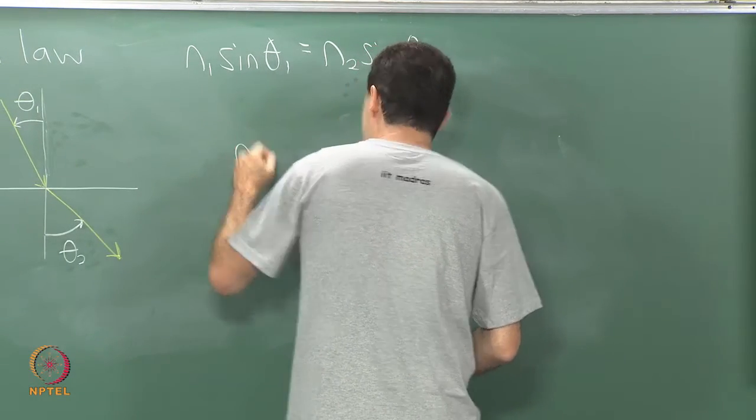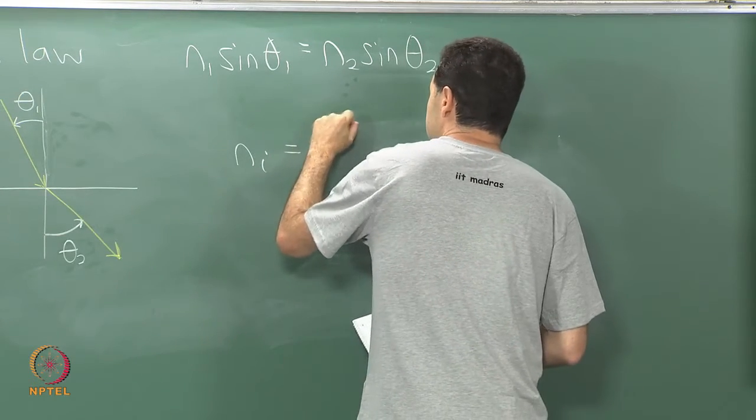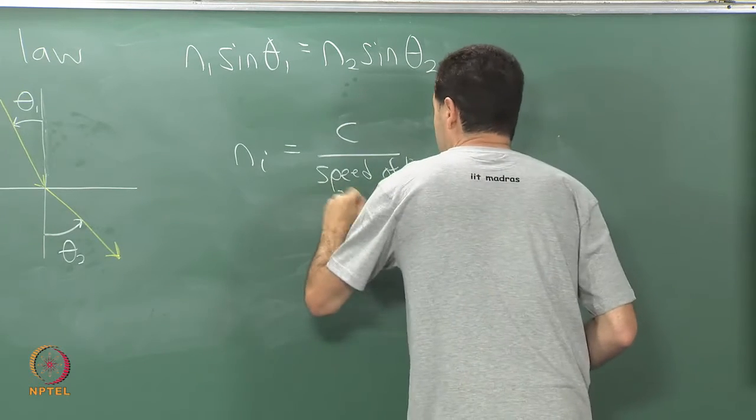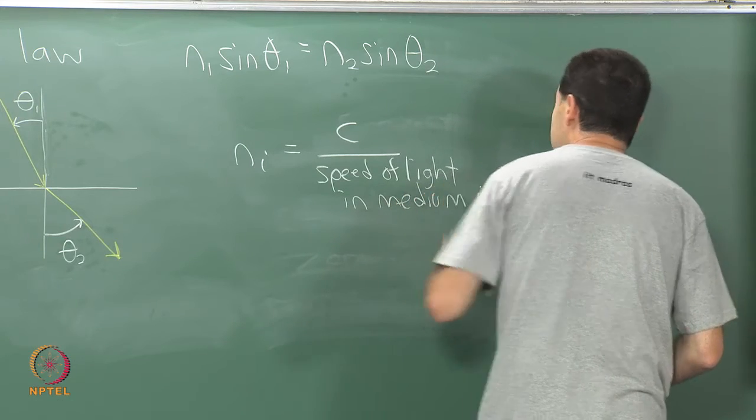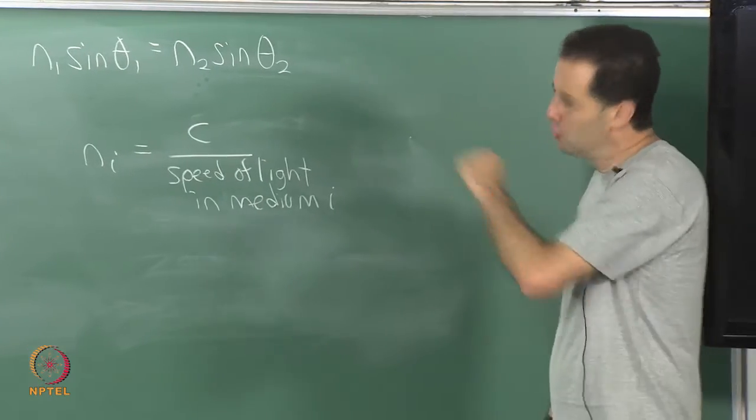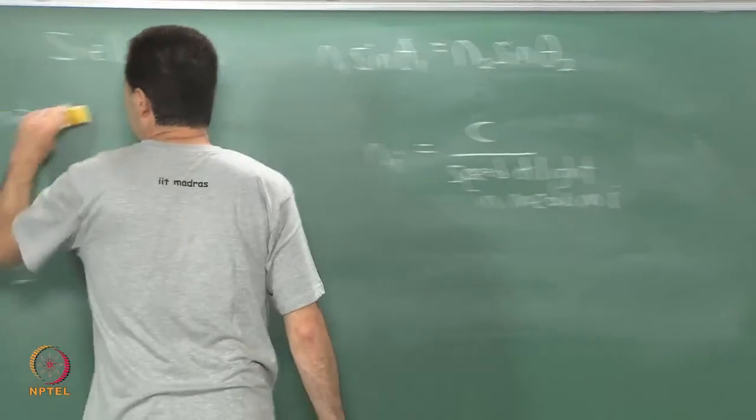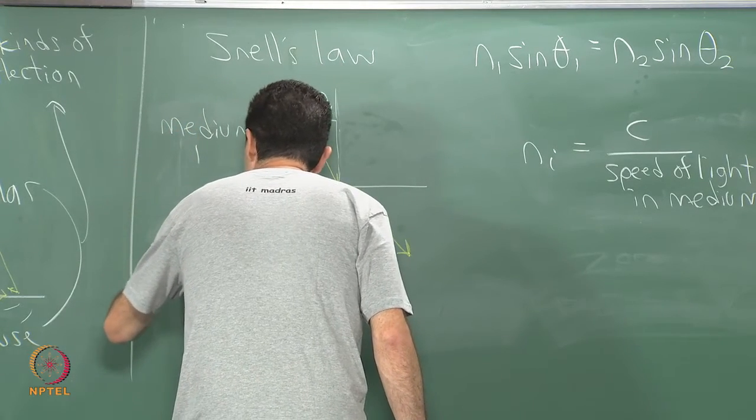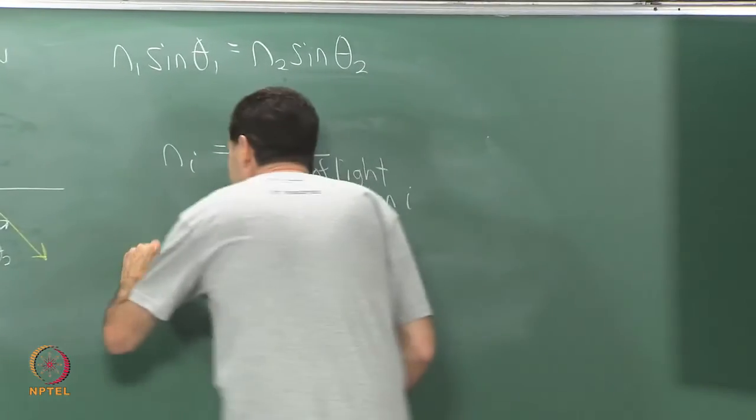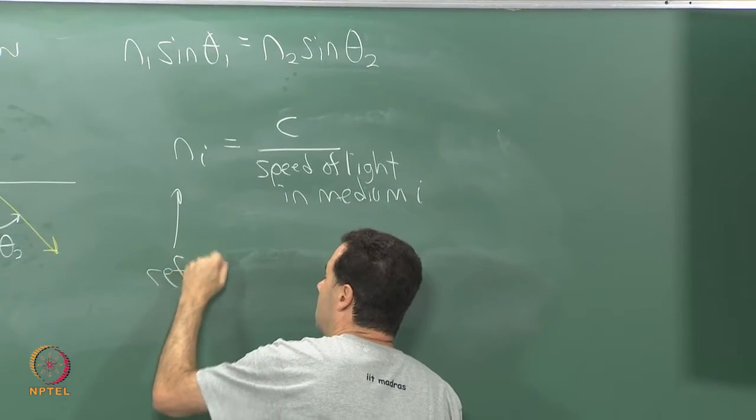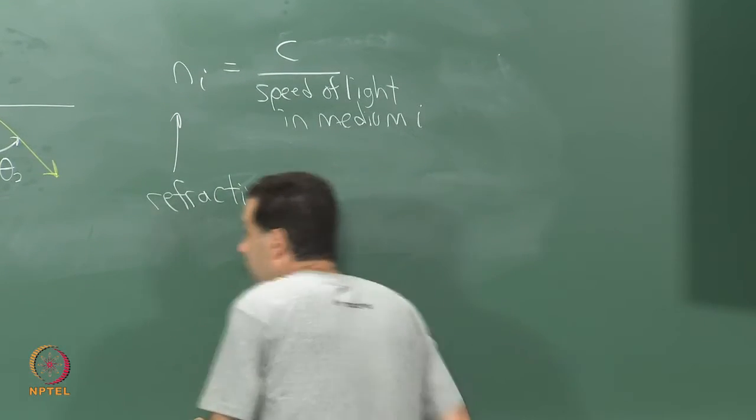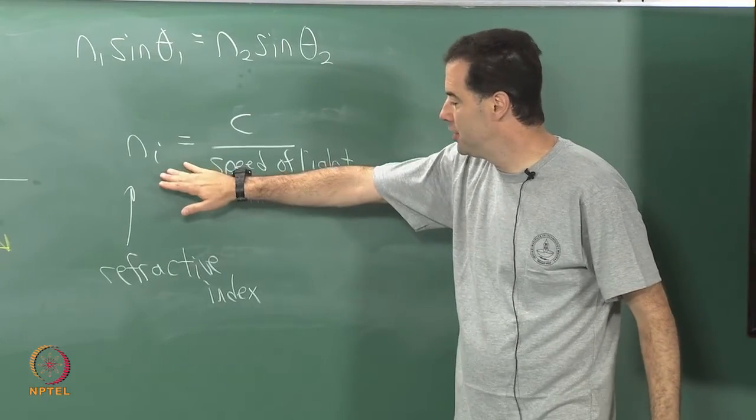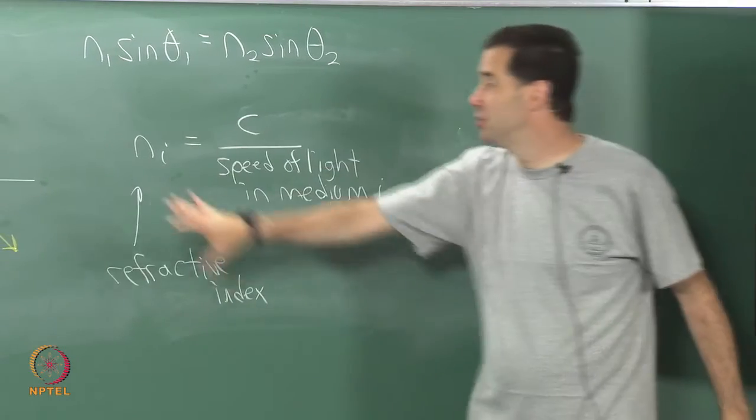The N's, I will put N sub I is equal to C, the speed of light in a vacuum, over the speed of light in the medium. I will put in medium I since I have numbered my materials or media. I have changed the words a bit: material or medium. It will be a little more consistent: medium 1, medium 2. N sub I is called the refractive index. Note that by the time you are done here, what really matters at this interface is not the absolute value of the refractive index, but what matters is the difference between the two refractive indices.